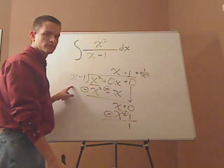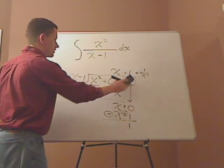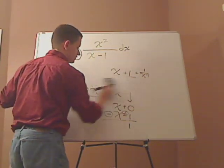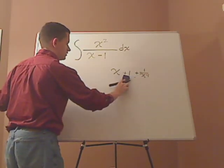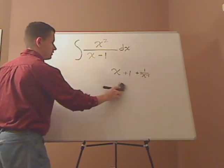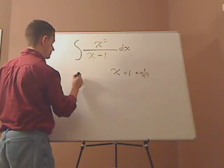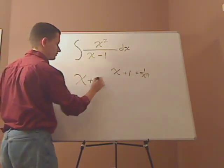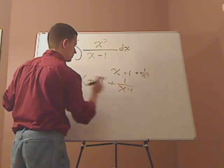Now you can take this. I'm going to have to erase this because I don't have room. You can take this simple thing, and let me center it so it's easier to see. So you have x plus 1 plus 1 over x minus 1.